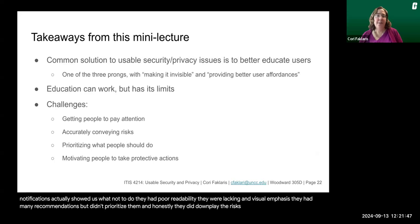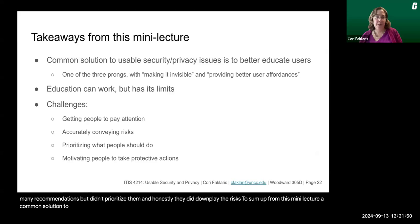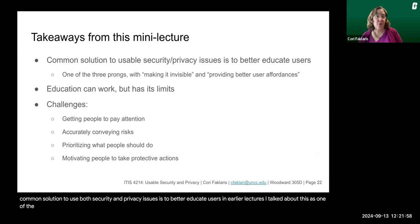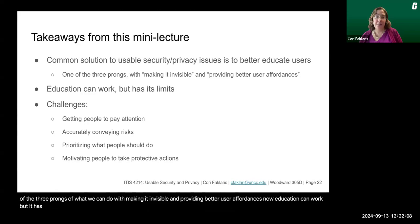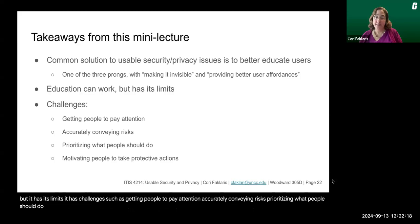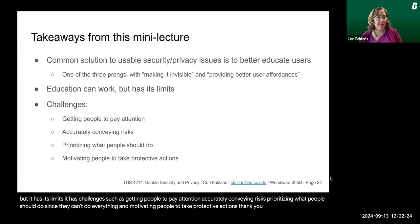To sum up from this mini lecture: a common solution to usable security and privacy issues is to better educate users — one of the three prongs alongside making things invisible and providing better user affordances. Education can work, but it has its limits and challenges, such as getting people to pay attention, accurately conveying risks, prioritizing what people should do since they can't do everything, and motivating people to take protective actions. Thank you for listening.